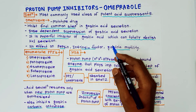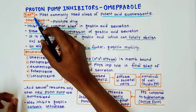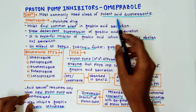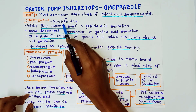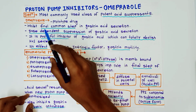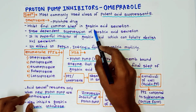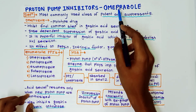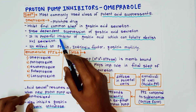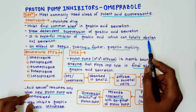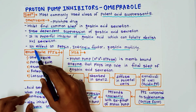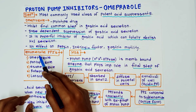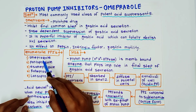First, the definition of proton pump inhibitors: these are the most commonly used class of potent acid suppression drugs. Omeprazole is the prototype drug of proton pump inhibitors. It inhibits the final common step in gastric acid secretion with dose-dependent suppression. It is a powerful inhibitor of gastric acid that can totally abolish HCl secretion, with no effect on pepsin, intrinsic factor, or gastric motility.